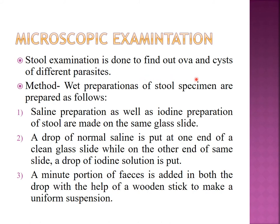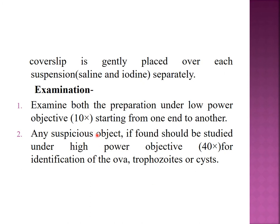Microscopic examination of stool is done to find the ova and cysts of different parasites. We prepare a wet film — saline mount on one side and iodine mount on the other side. Using a wooden or match stick, we take the stool sample, mix it with a drop of normal saline and a drop of iodine, then put the cover slip and examine under the microscope. First, low power microscopy is done, followed by high power microscopy to identify the ova, trophozoites, and cysts.